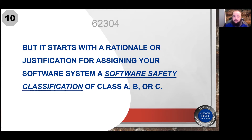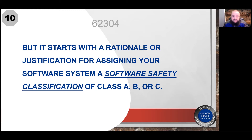But before all of that, it begins with a rationale or justification for assigning your software system a software safety classification. That classification will result in a class assignment of A, B, or C, and this is done according to the risk of harm from a hazardous situation that your software system could contribute to in a worst-case scenario — excluding special rules for decomposed software items that have been specially segregated and rationalized for independent classification from the software system.